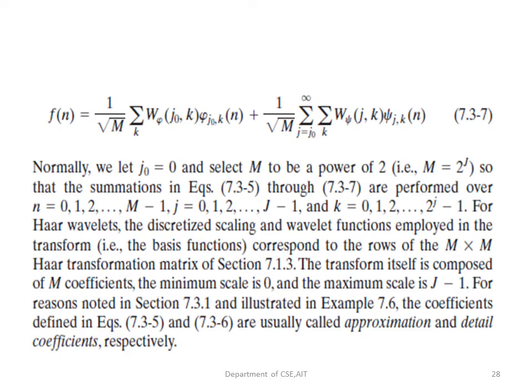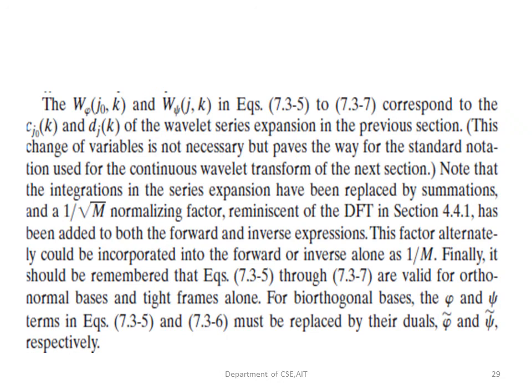For the Haar wavelets, the discretized scaling and wavelet functions correspond to the Haar transformation matrix of size M×M. The transform consists of M coefficients where the minimum scale is 0 and the maximum is J−1. The coefficients defined previously are usually called the approximation and detail coefficients respectively — W_φ is the approximation coefficient and W_ψ is the detail coefficient. These correspond to c(j₀,k) and d(j,k) of the wavelet series expansion.